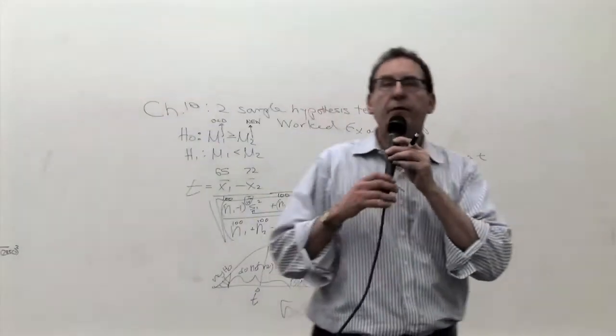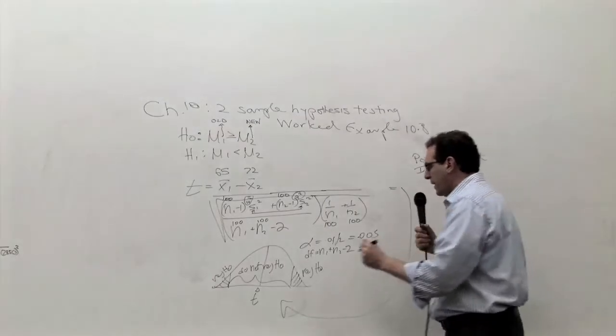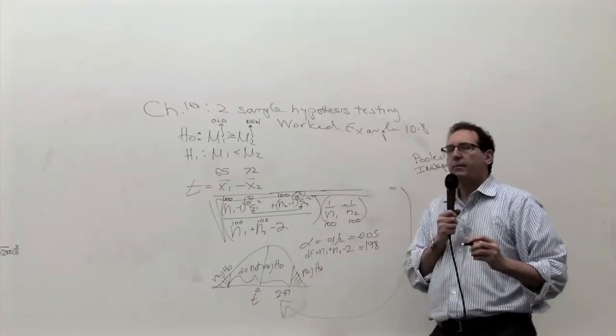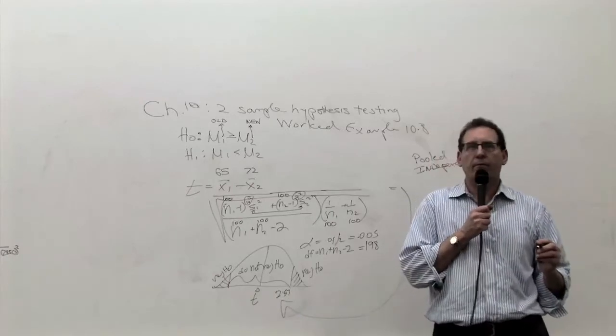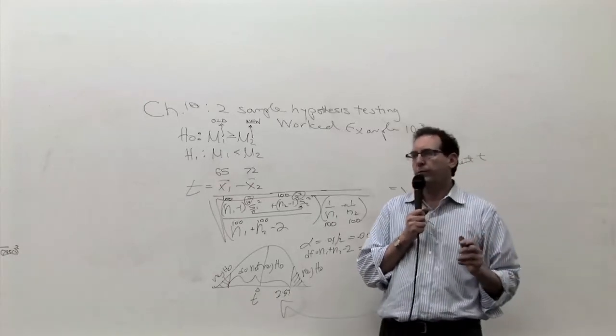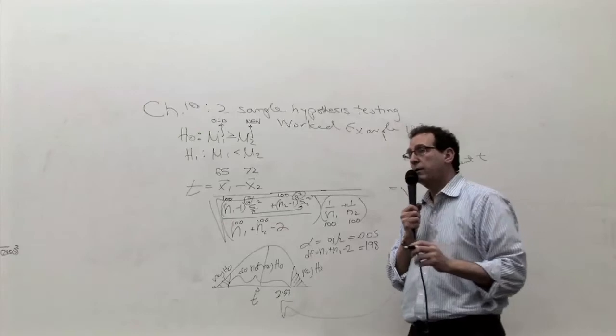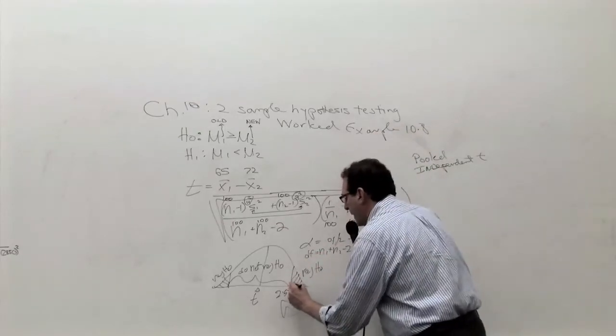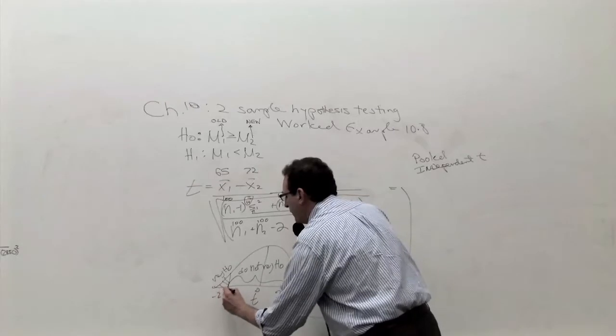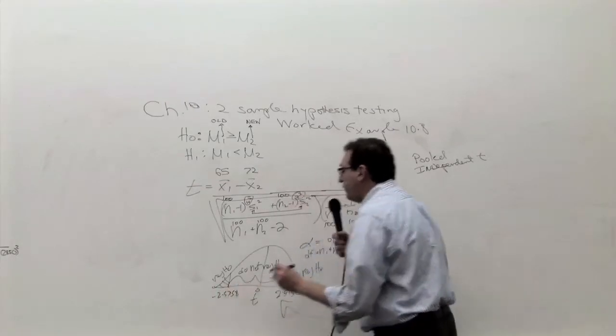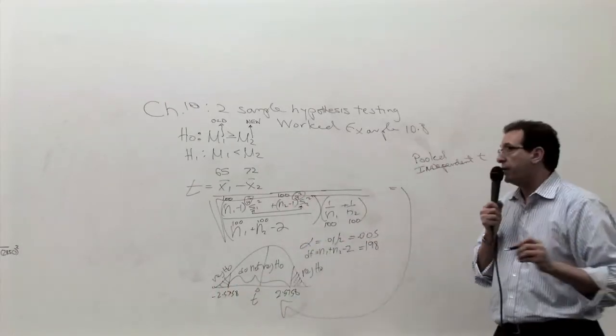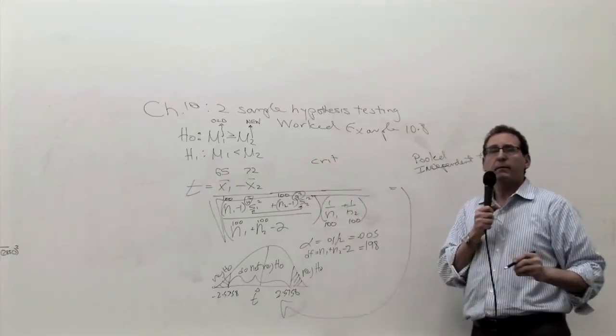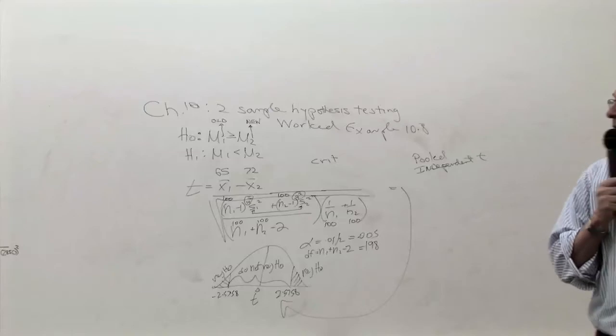Anybody who cares to prepare for the test should be looking up the T table. And it's 2.57 something. Yes, Laura? 5.8. And minus 2.5758. If you're doing this by the critical value method, remember this is called the critical value method.